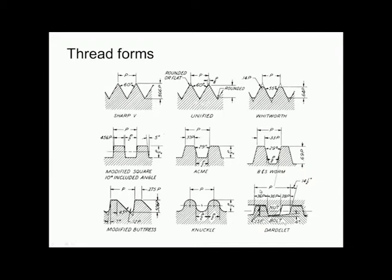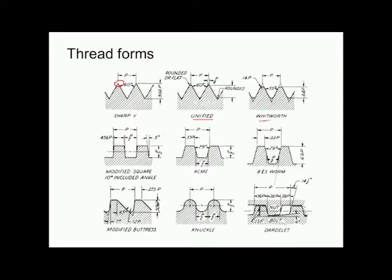Various thread forms are used in practice. A sharp V thread has a sharp crest; when the crest is made rounded or flat, it is called unified thread. For sharp V and unified threads, the included angle is 60 degrees, whereas for Whitworth thread it is 55 degrees. Modified square thread has a 10-degree included angle and is used in power screws. Acme threads have a 29-degree included angle. Similarly, we have modified buttress and knuckle threads.